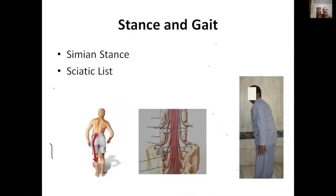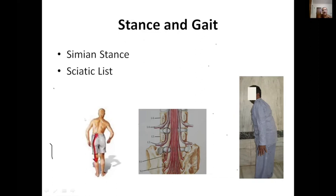Regarding gait: the simian stance — a forward-stooped posture seen in lumbar canal stenosis — will be discussed by Dr. Kapoor. The sciatic list is important: in an axillary disc presentation, the patient leans toward the same side to relax the nerve root; in a shoulder presentation (the disc compressing near the shoulder of the nerve root), the patient leans to the opposite side.